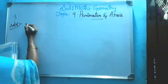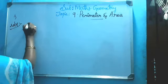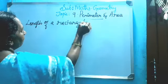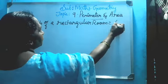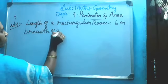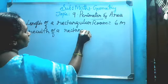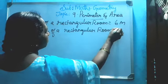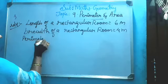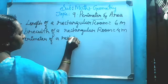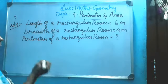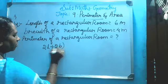Solution: length of a rectangular room is 6 meters. Breadth of a rectangular room is equal to 4 meters. Now apply: perimeter of rectangular room is equal to the formula, 2 length plus 2 breadth, unit.